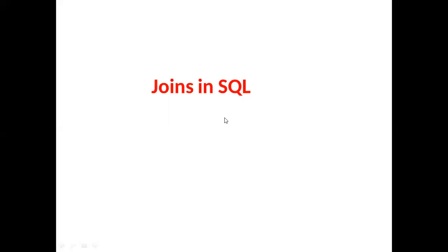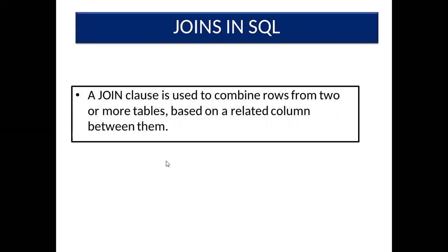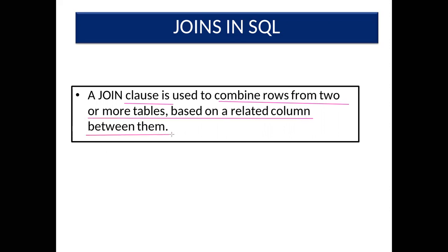Now let's start joins in SQL. First, what is joining? A join is used to combine rows from two or more tables based on a related column between them. In general language, join is used to retrieve the information from more than one table. If one table is not sufficient to retrieve the particular information, then we use join.